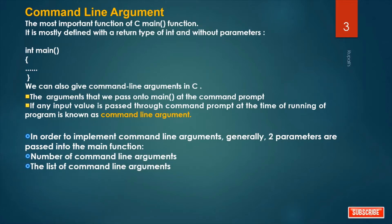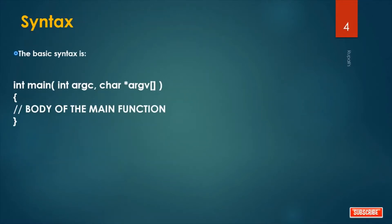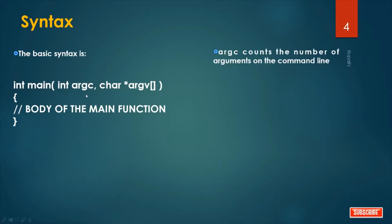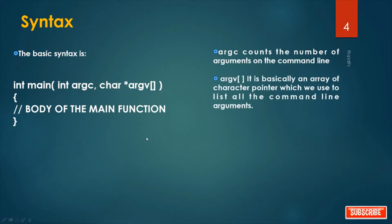We will learn this in detail. What is the syntax? The syntax is: you write int main with some parameters. The first parameter is int argc — argc counts the number of arguments on the command line. The second parameter is char* argv — argv is basically an array of character pointers which we use to list all the command line arguments.